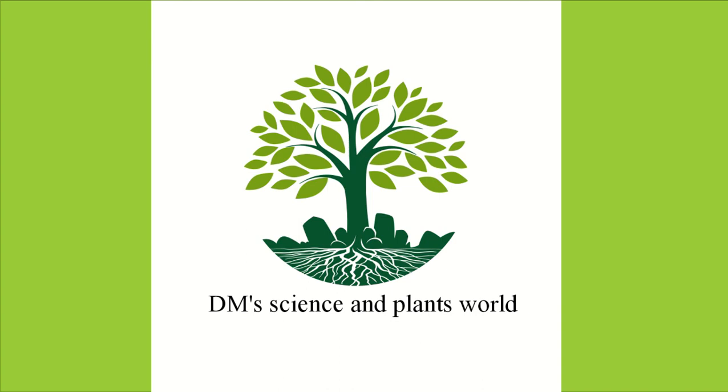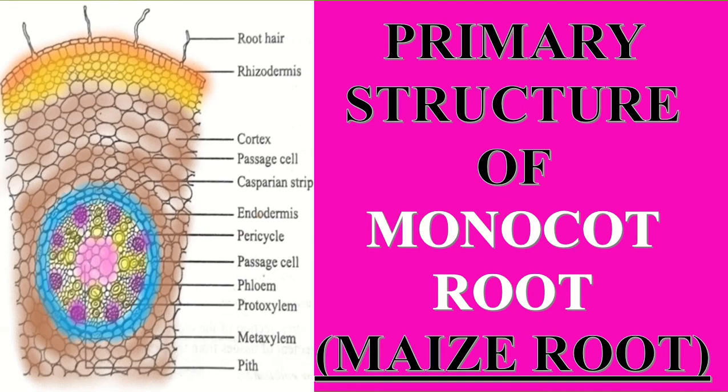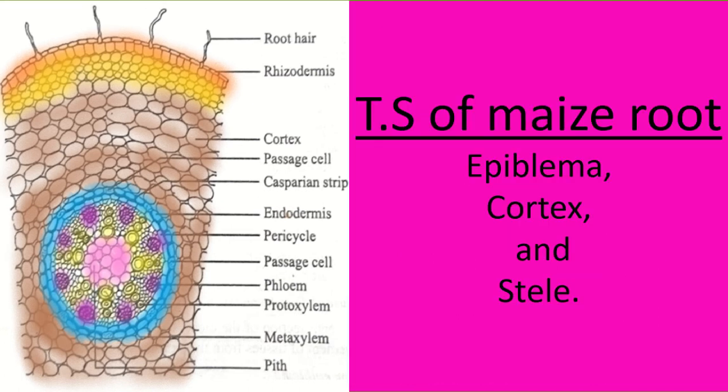DM Science and Plants World presents about the primary structure of monocot root. An example of the monocot root is maize root. We already discussed monocot and dicot stem — do check the description box to find the links for those videos. The transverse section of maize root includes regions like epiblemma, cortex, and stele.